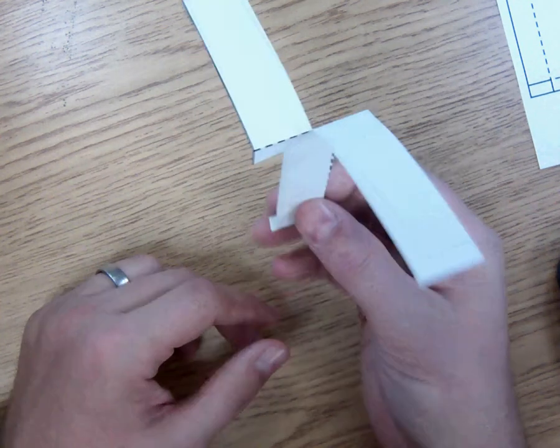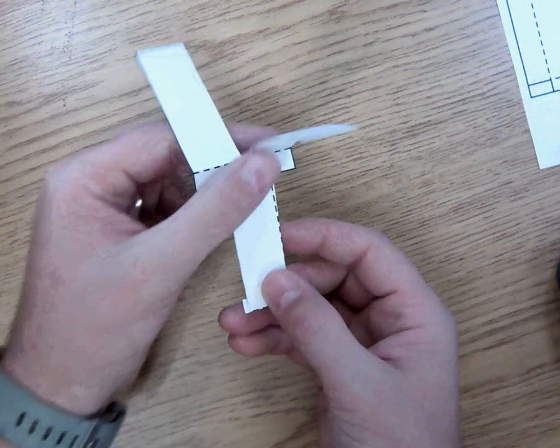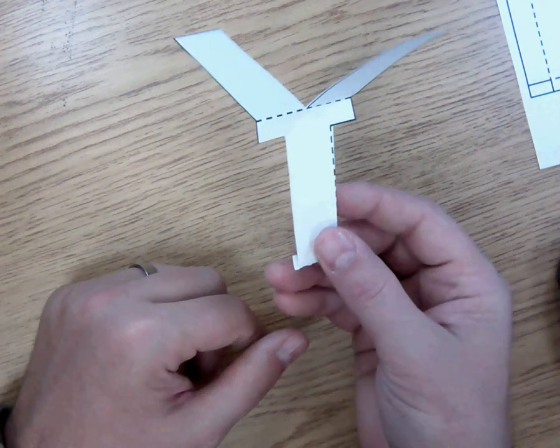Now when you hold it vertically, you want to make sure these little flaps are a little bit higher. So whenever you drop it, it'll spin. Remember when you're doing this and you drop it, it should spin. If it doesn't spin, then it definitely is not flying.